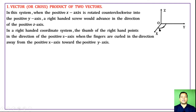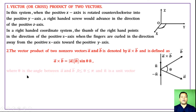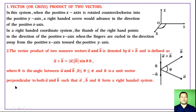Fingers curling from the positive direction of the x-axis to the positive direction of the y-axis, the z-axis follows. The vector product of two non-zero vectors a and b is denoted by a cross b and is defined as: a cross b equals magnitude of a, into magnitude of b, into sin theta, times n̂. Here theta is the angle between vector a and vector b, where 0 ≤ θ ≤ π.